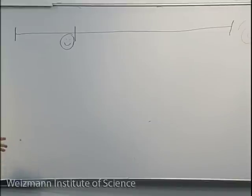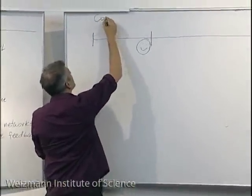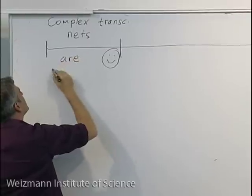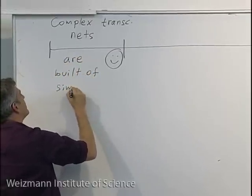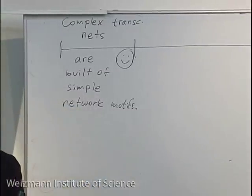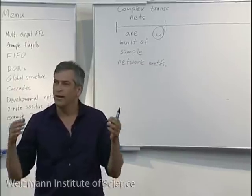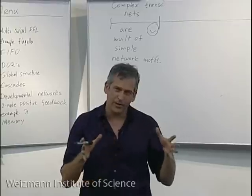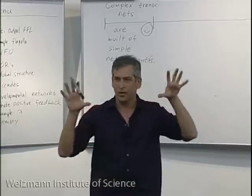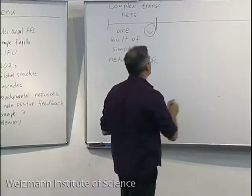In this section we're talking primarily about one design principle: that complex transcription networks are built of relatively simple network motifs. Today will be the last class on this particular design principle. We'll talk about all the remaining network motifs, exhaust everything we know about in transcription networks — their functions for timing and memory — and then talk about how the motifs fit together to make the global structure.